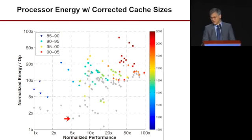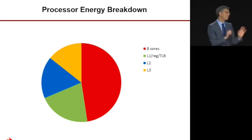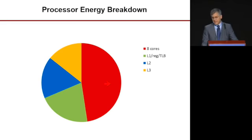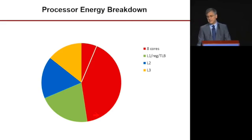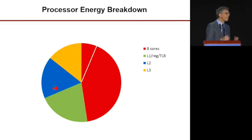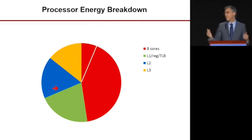I talked to friends who gave me an energy breakdown for a modern processor — an eight-core out-of-order processor with a three-level cache hierarchy. The processor cores take about half the energy and the on-die memory system takes about the other half. From a single-core perspective, that one core is one-eighth of the processor energy — much less than the energy of just the third-level cache. The L1 and L2 cache energies scale with processor count, but the L3 cache energy won't scale because it's necessary to filter requests and keep memory stall time reasonable.